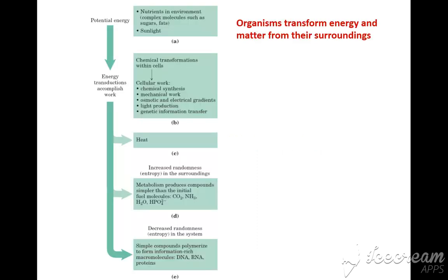In the physical foundation, nutrients in the environment — complex molecules such as sugar, fed by sunlight — are potential energy. These are converted through chemical transformations within cells into cellular work: chemical synthesis, mechanical work, osmotic and electrical gradients, light production, and genetic information transfer. Nutrients in the environment as potential energy are converted into work.